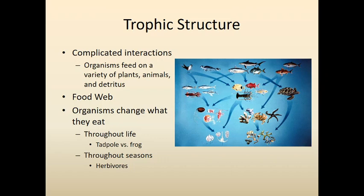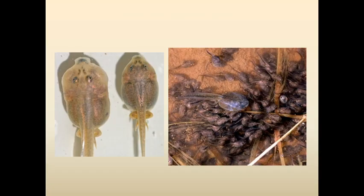Throughout the seasons, lots of things change what they eat. Think about a white-tailed deer in Wisconsin: during the summer they're eating sprouting plants, in the fall they're eating corn from the fields, but through winter those food sources go away and they're eating bark off trees. So even a single food web, let alone a food chain, doesn't always explain what's going on.